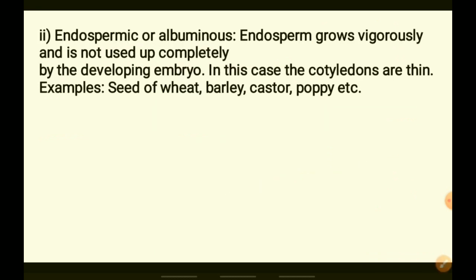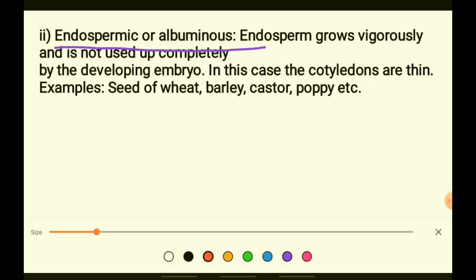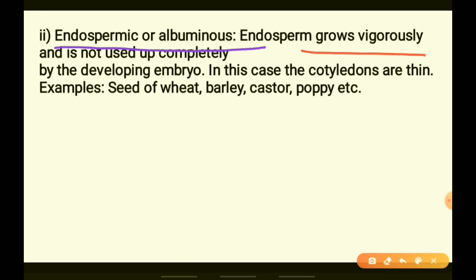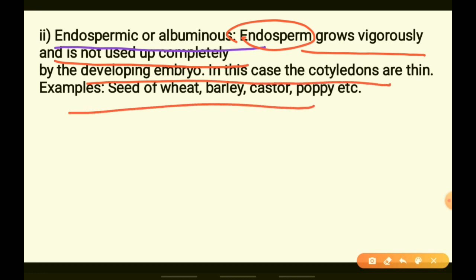Endospermic or albuminous seeds are those where the endosperm is not completely used up by the developing embryo — they utilize only a partial amount of nutrients. Embryo requires energy for growth and development.